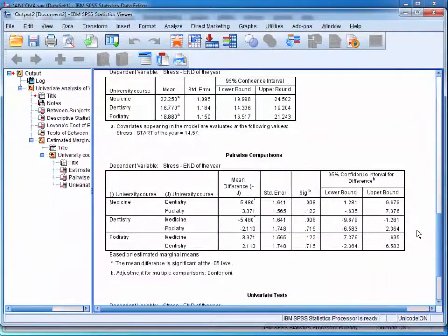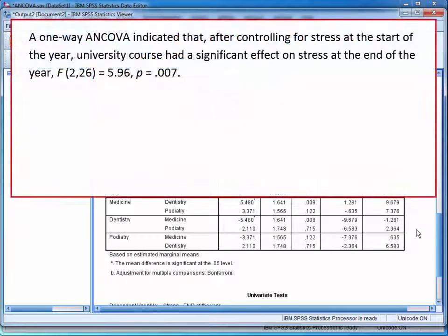You could write up the findings like this: A one-way ANCOVA indicated that, after controlling for stress at the start of the year, university course has a significant effect on stress at the end of the year.